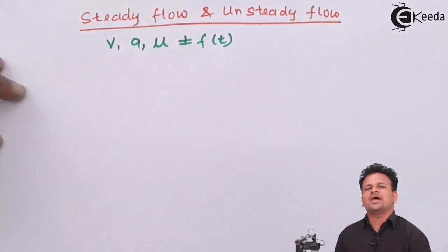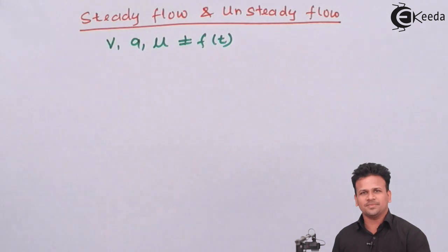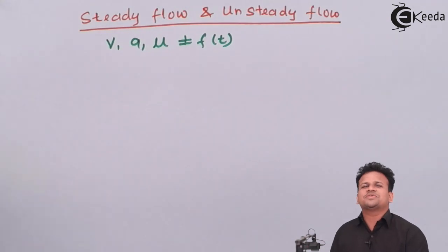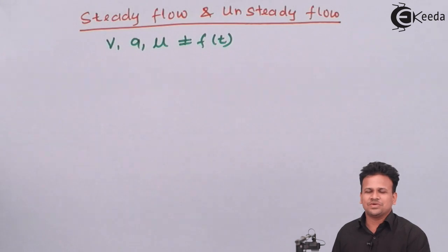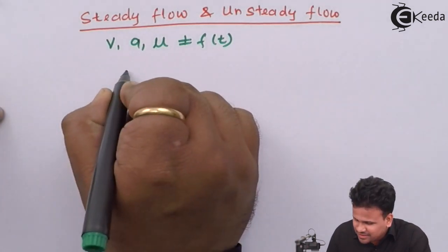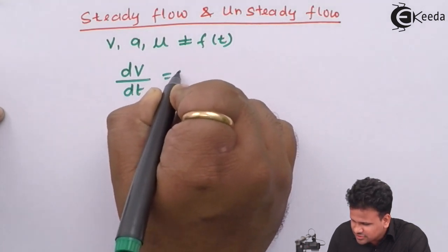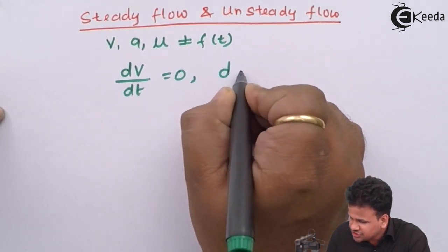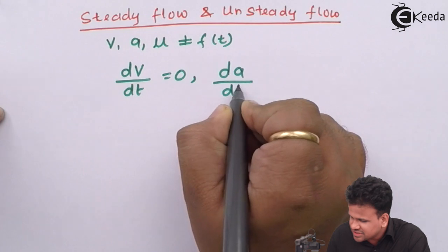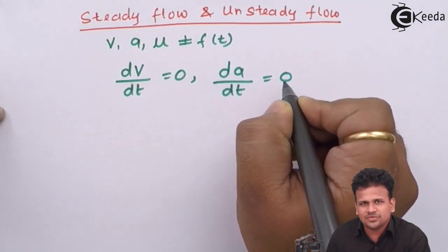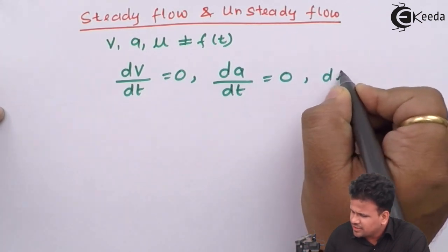Not a function of time means they are not dependent upon time. If they are not dependent upon time, the change with respect to time of all the fluid parameters will be zero. So this can be written as dv/dt = 0, and similarly change in acceleration with respect to time equals zero, and change in viscosity with respect to time equals zero.